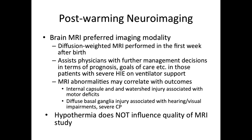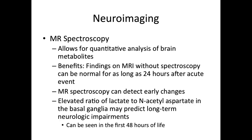MRI findings can also correlate with outcomes and help predict potential deficits the infant may have. For example, internal capsule and watershed injury are associated with motor deficits, while diffuse basal ganglia injury is associated with hearing and visual impairments. MR spectroscopy is also a useful modality that allows for quantitative analysis of brain metabolites. Findings on a regular MRI can be normal for as long as 24 hours after the acute event, whereas MR spectroscopy can detect early changes. Specifically, an elevated ratio of lactate to N-acetyl aspartate in the basal ganglia may predict long-term neurologic impairments.